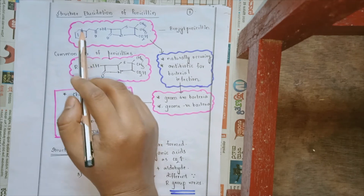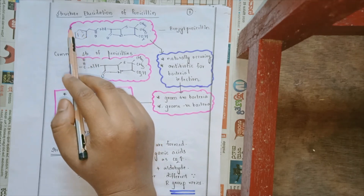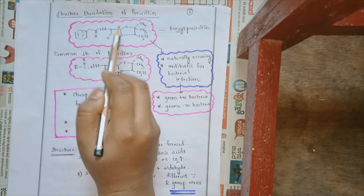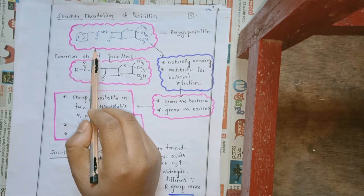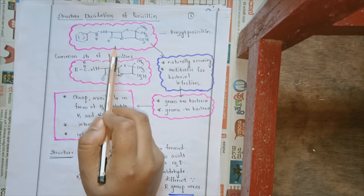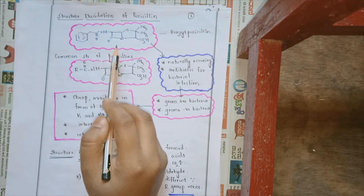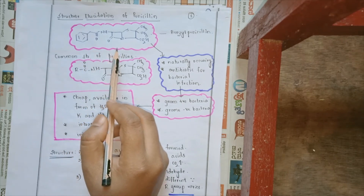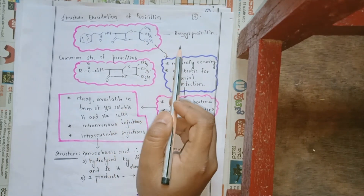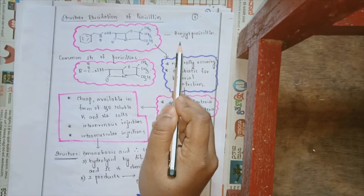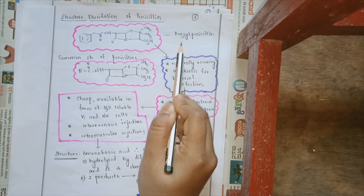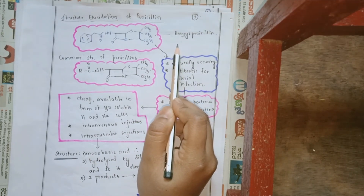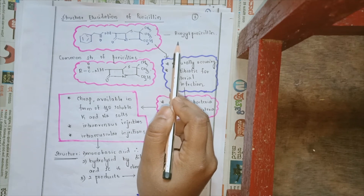Hello everyone. We will be looking into the structure elucidation of penicillin. The structure of penicillin is a beta-lactam structure. The structure elucidation we will be looking into would be benzyl penicillin, also called as penicillin G.